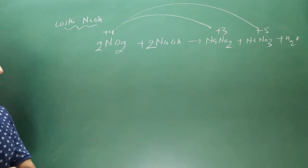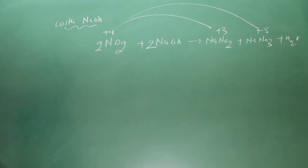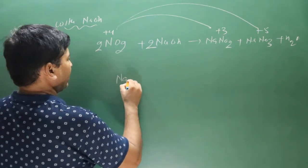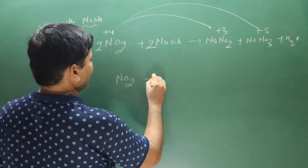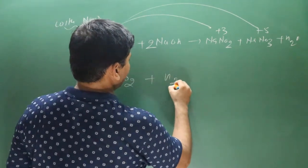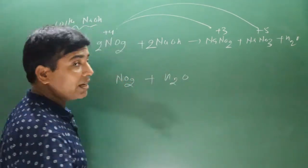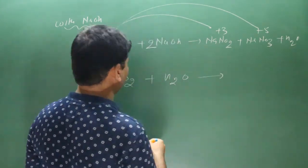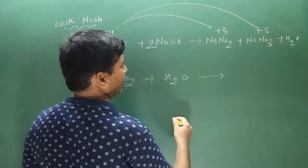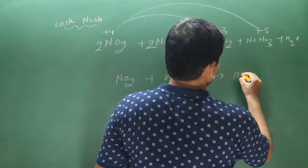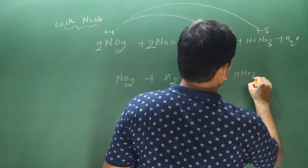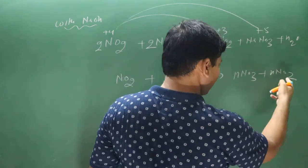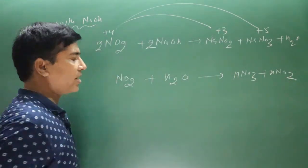Nitrogen dioxide dissolves in water. In the absence of air, it produces nitric acid (HNO3) and nitrous acid (HNO2). Balancing: 2 nitrogen on each side.